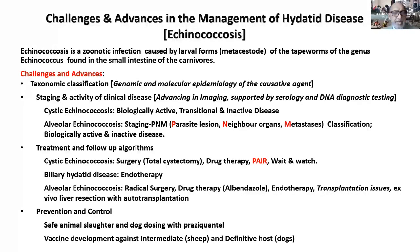What are the inputs on treatment and follow-up algorithms? For cystic echinococcus, surgery has been the main method of management for decades and centuries. But a new surgical tool called total cystectomy is more and more being introduced. Drug therapy and a wait-and-watch policy for inactive disease are also options. The endotherapy has come as a major way of managing this disease when it gets to the bile duct. For alveolar echinococcus, radical surgery is important if it is resectable disease.